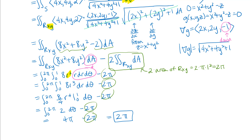I end up with 2pi. I have a positive flux, which means I have more flow in the direction of those N vectors — which are outward on that paraboloid — than I do inward. It doesn't mean that all the flow is outward, but it means I have more flow out than in across that surface. It might be interesting to look at a picture of that vector field and that surface and see if you can verify that from looking at the picture.